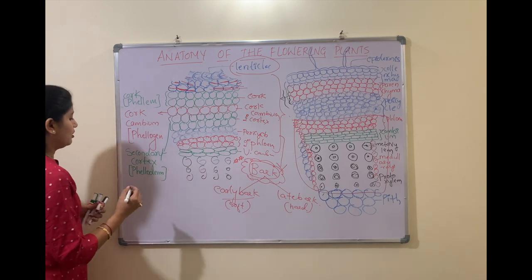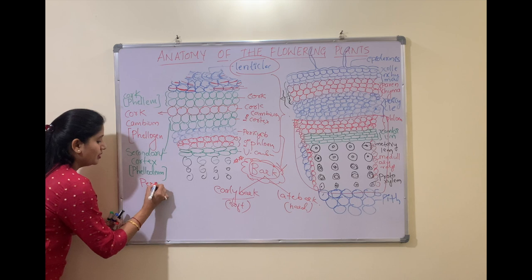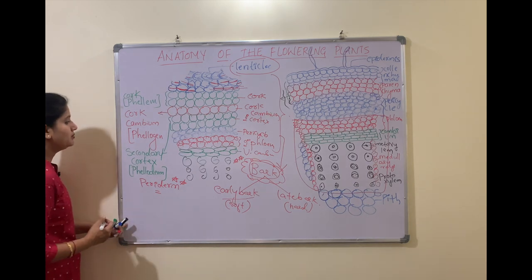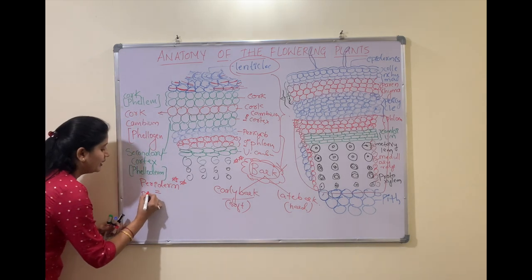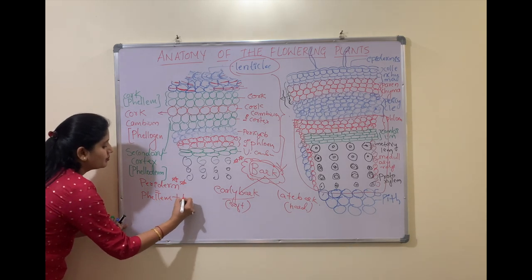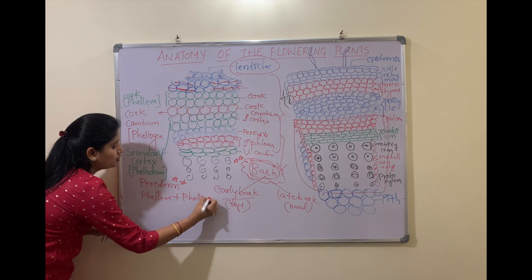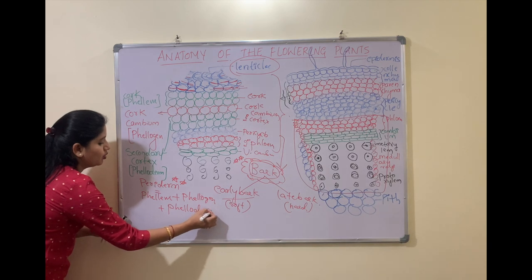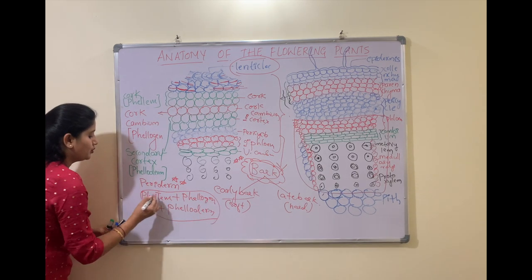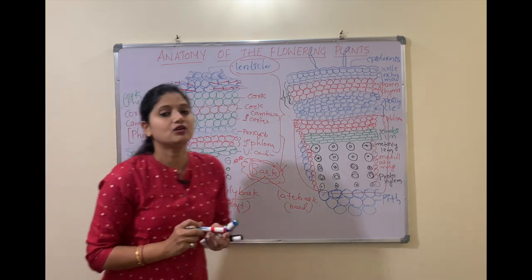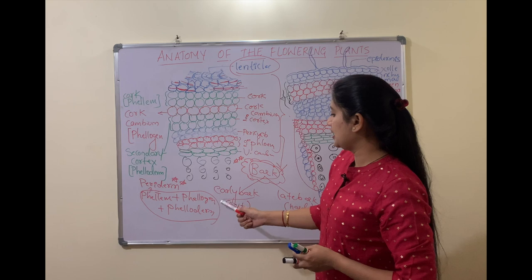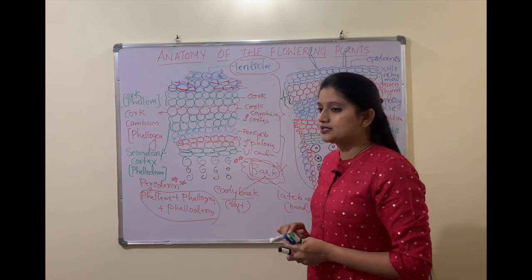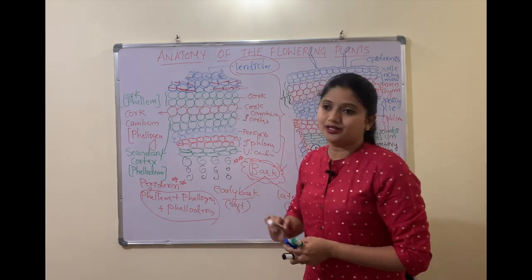One more important term to remember is periderm. Periderm is a combination of phellem + phellogen + phelloderm, that is, cork + cork cambium + secondary cortex together will give rise to periderm.